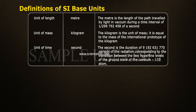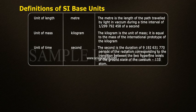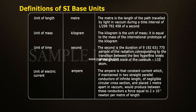Unit of Time: Second. The second is the duration of 9,192,631,770 periods of the radiation corresponding to the transition between the two hyperfine levels of the ground state of the cesium-133 atom.